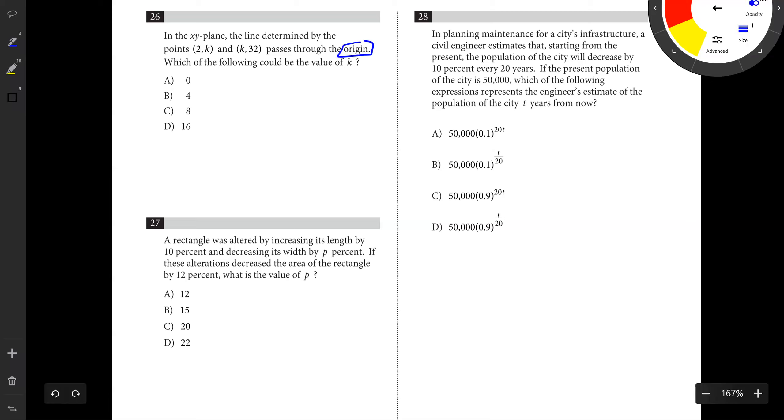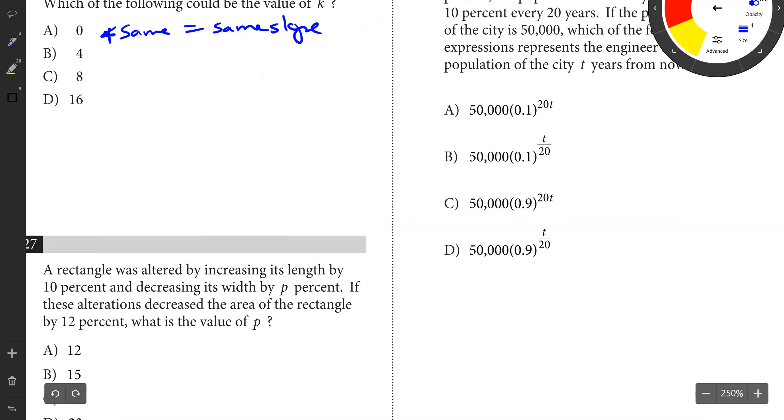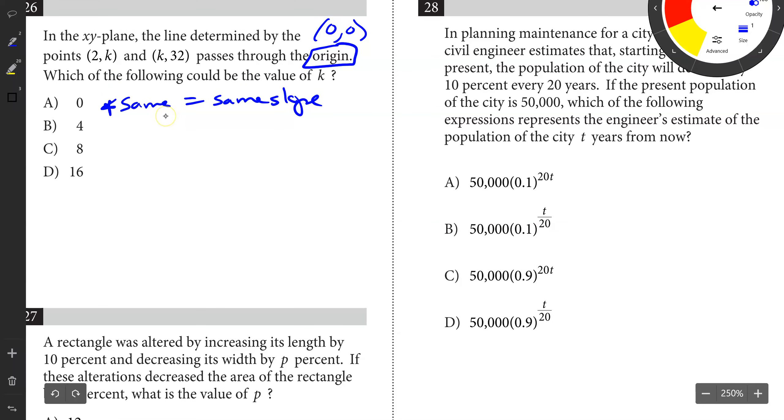We know the origin is 0, 0. If they're on the same line, same line equals same slope. Find the slope between 0, 0 and 2, K. That would be K minus 0 over 2 minus 0, which is K over 2. Now let's find the slope between 0, 0 and K, 32. That would be 32 minus 0 over K minus 0, which is 32 over K.